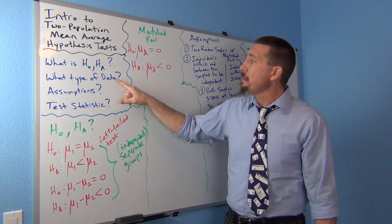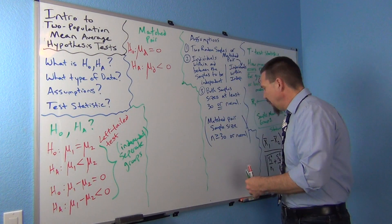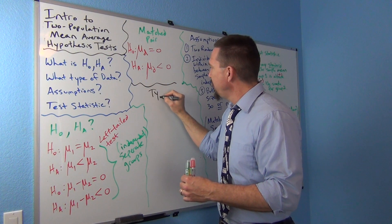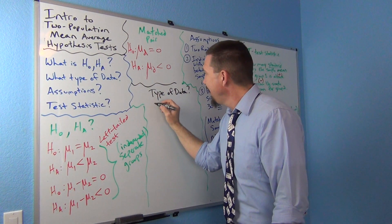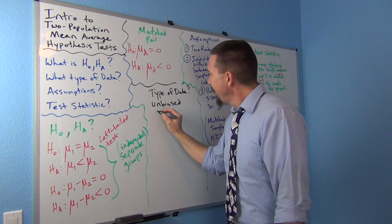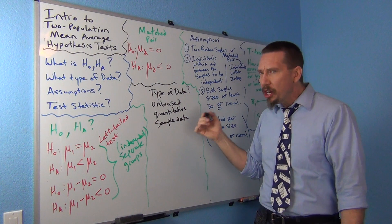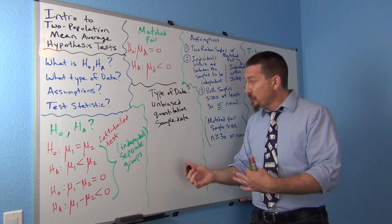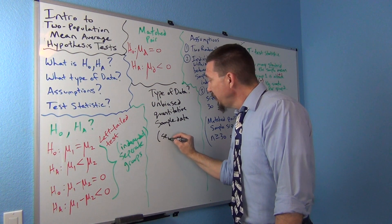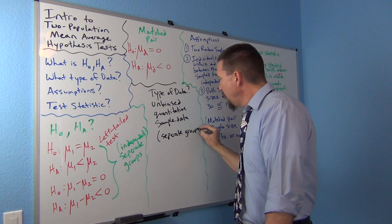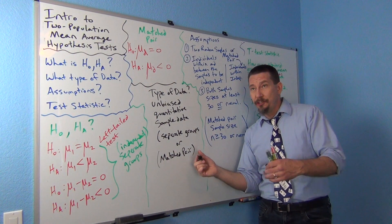What type of data do we need for this test? Since it's mean average, it has to be quantitative data — specifically, relatively unbiased quantitative sample data. Some kind of numerical measurement data from either matched pair or separate independent groups. For matched pair, I actually collect two bits of data from the same person, though you can have other kinds of matched pairs.